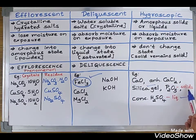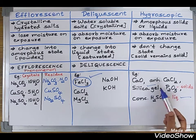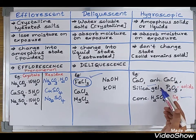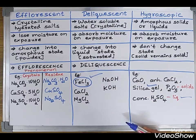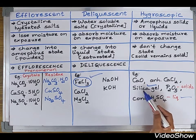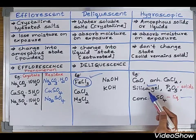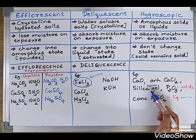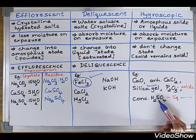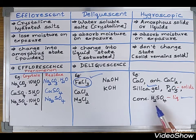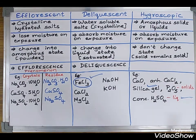Examples of hygroscopic substances include solids such as calcium oxide (quicklime), anhydrous calcium chloride, and silica gel. Silica gel is very important — you have seen silica gel packets in the packaging of footwear or leather bags. These packets absorb moisture and thus prevent the materials from being attacked by fungus. The only liquid example of a hygroscopic substance to remember is concentrated sulfuric acid.